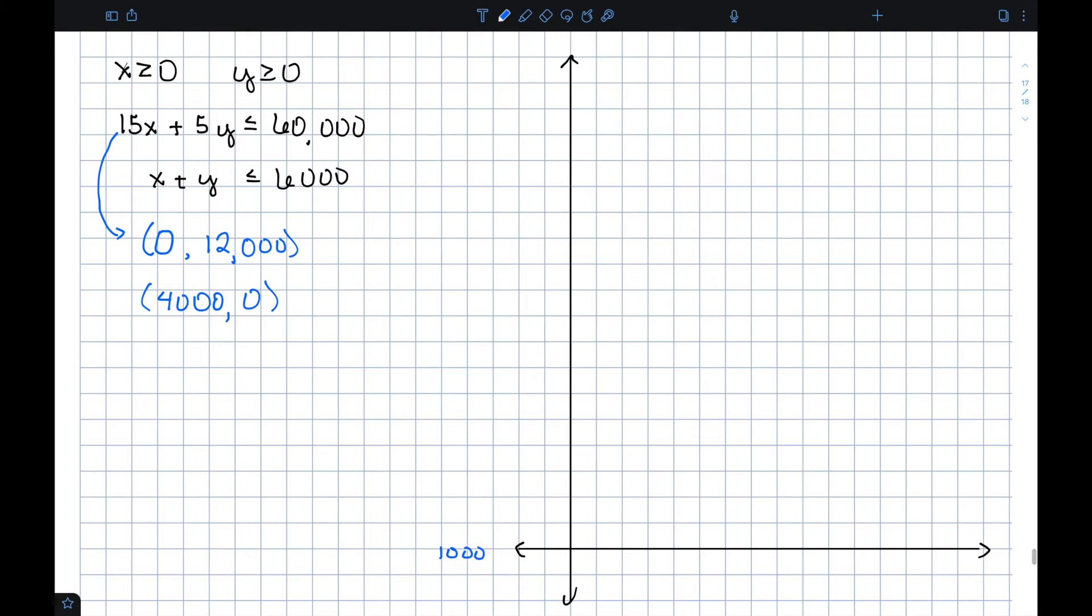So as I graph this, I'm going to let each one of these boxes be 1,000. I should be able to go over zero and up to 12,000. I should also be able to go over to 4,000 and up zero. And we can connect these dots. Since zero plus zero is in fact less than 60,000, I should be shading on the side of the line that has zero, zero.